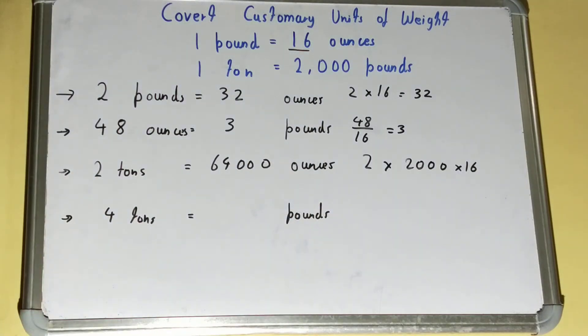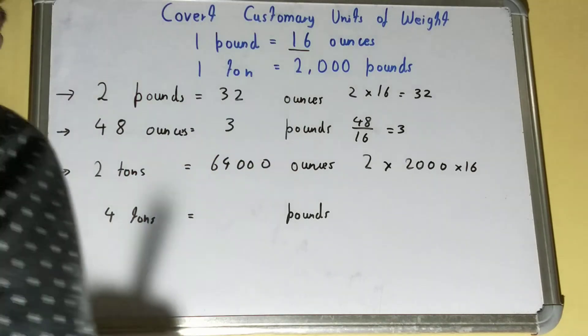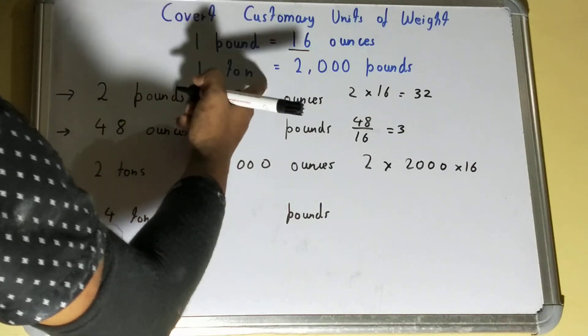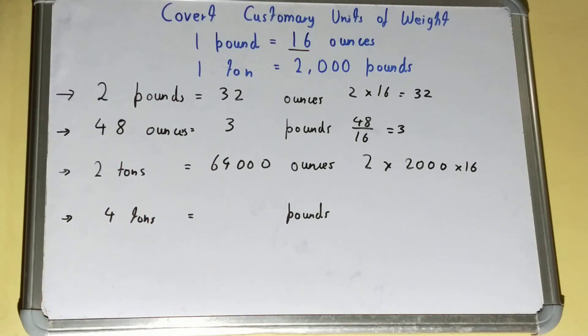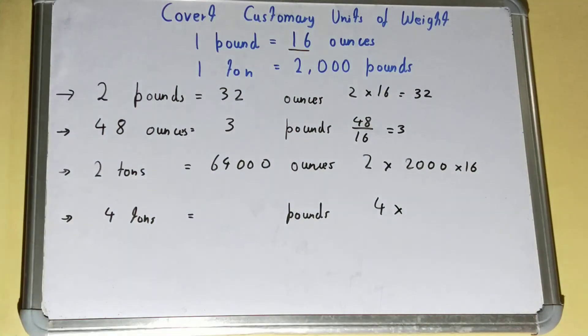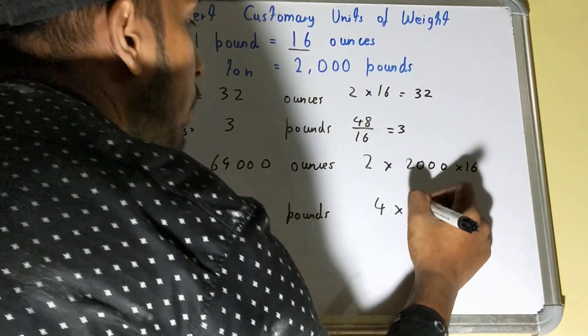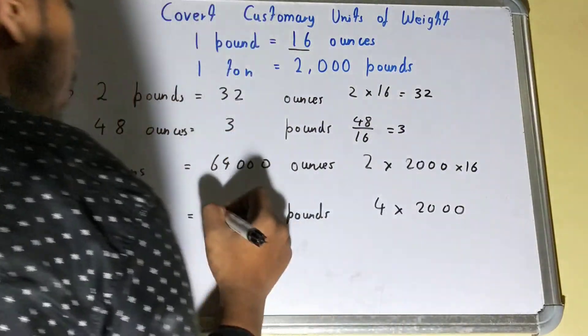Let's see for tons to pounds. We know that one ton is equal to 2,000 pounds. So it is a conversion from a higher unit to a smaller unit, so we will multiply. 4 times 2,000, so it will be 8,000 pounds.